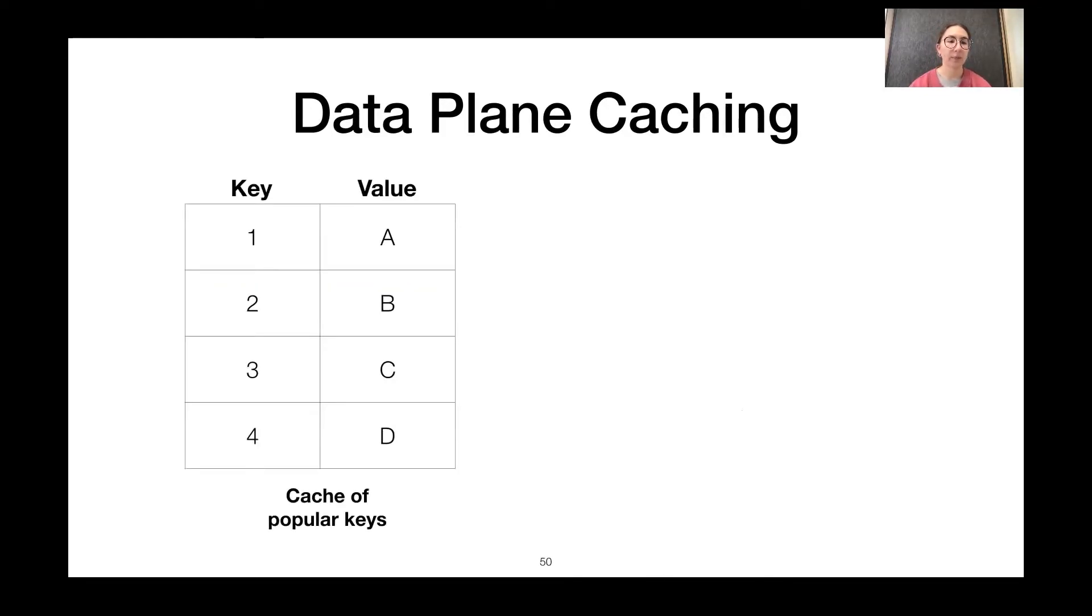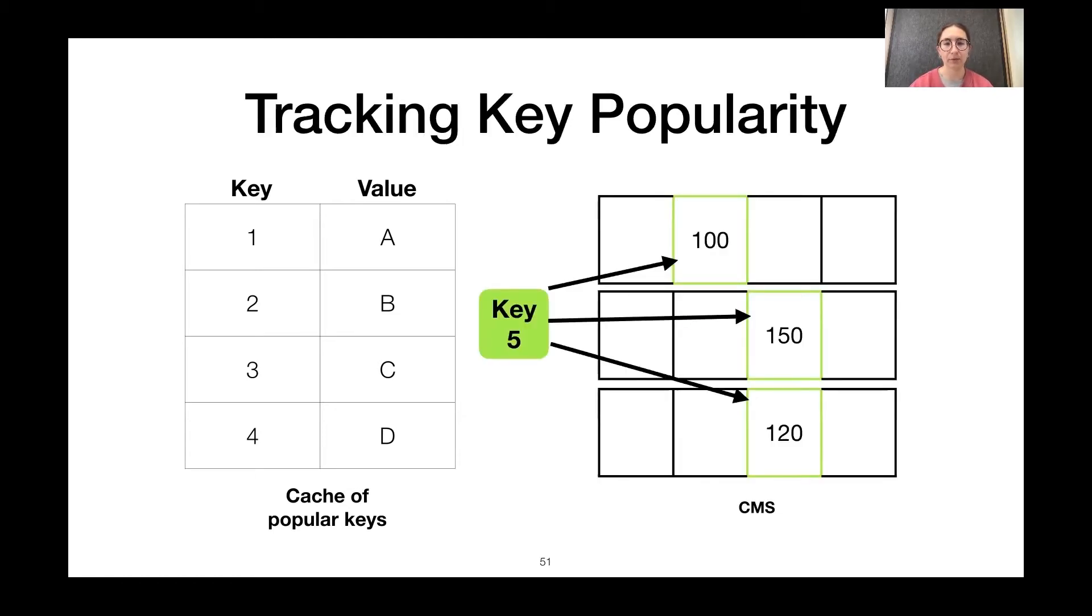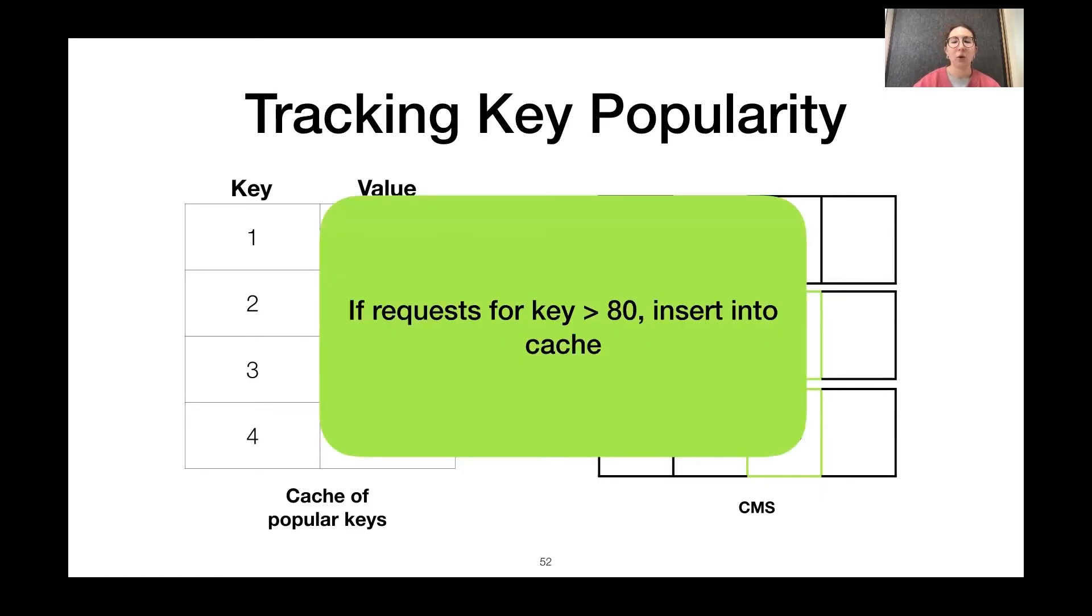So, on our switch, we want to keep a list of all the popular keys and their corresponding values. However, the popularity of these keys may change over time. So, ideally, we want our switch to be able to identify when an uncached key becomes popular enough to be cached. And this is where we can use our count sketch. So, our count sketch can track the popularity of uncached keys. So, if the switch sees a request for a key that is not in the cache, it will add it to the sketch. And if the estimated count in the sketch is greater than some threshold, let's say in this example greater than 80, we can insert the key into the cache because it's now become popular.